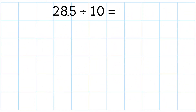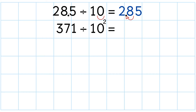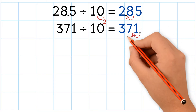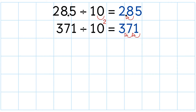Let's take a look at a few examples. 28.5 divided by 10 — 10 only has one zero, so we move the decimal point one place to the left. We get 2.85. 371 divided by 10 to the power of 2 — 2 is the exponent, so we move the decimal point two places to the left. We get 3.71.